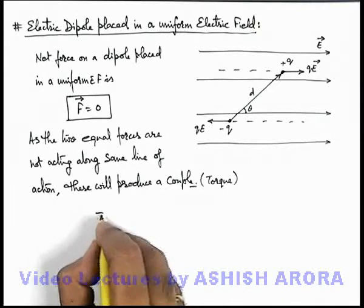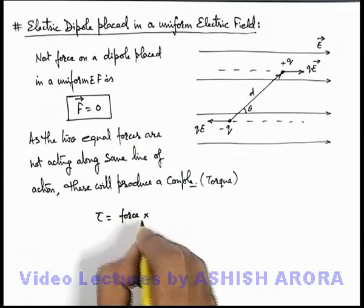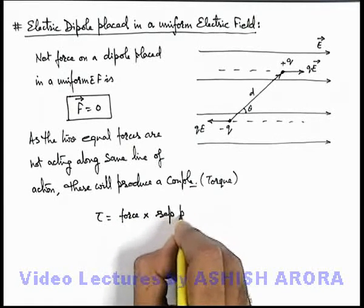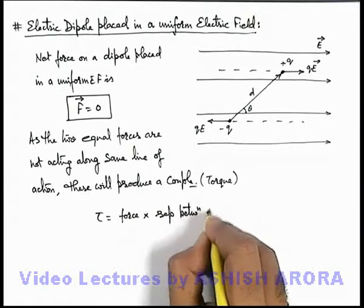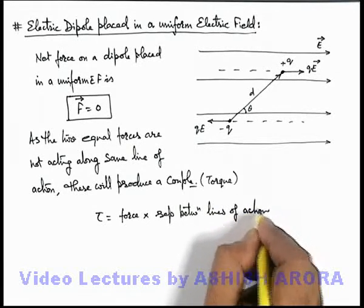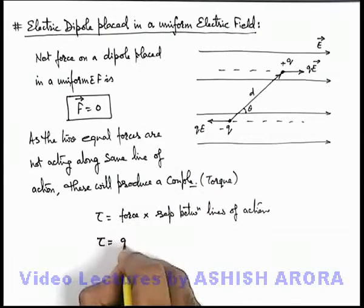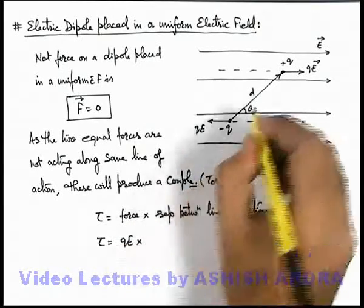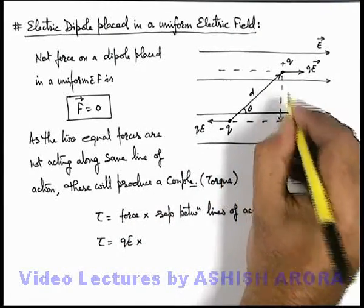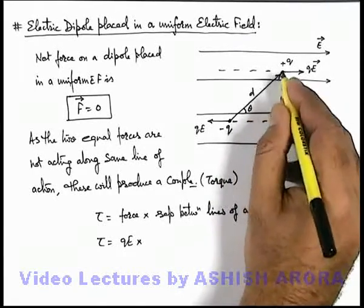So we can write down the value of torque as, in case of couple it is defined as force multiplied by separation between lines of action of forces. So here the magnitude of torque can be given as force which is qE multiplied by the separation between the two lines.